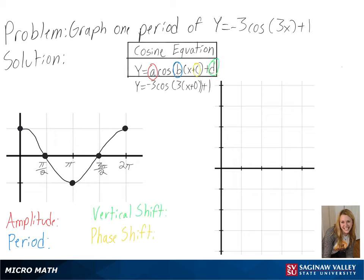We can see that we don't have a phase shift, but we do have a vertical shift of 1, which will make our graph go up 1 unit, so our center will be at 1.